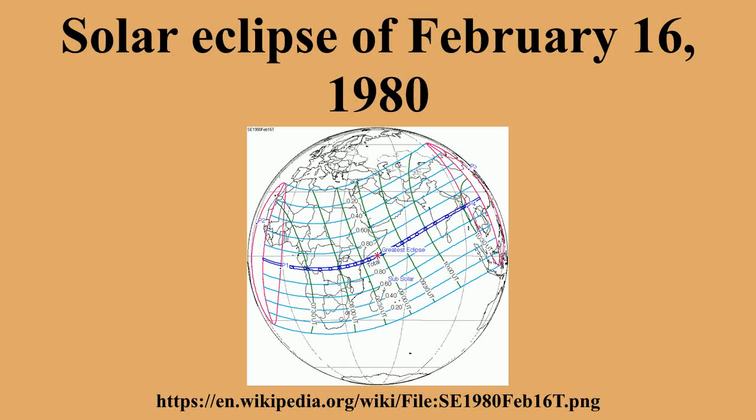A total solar eclipse occurred on February 16, 1980. A solar eclipse occurs when the Moon passes between Earth and the Sun, thereby totally or partly obscuring the image of the Sun for a viewer on Earth.